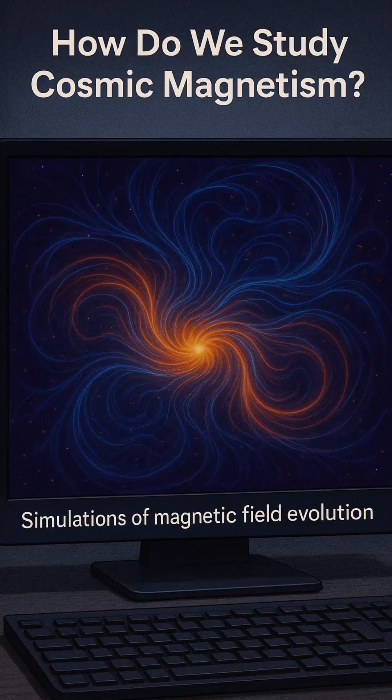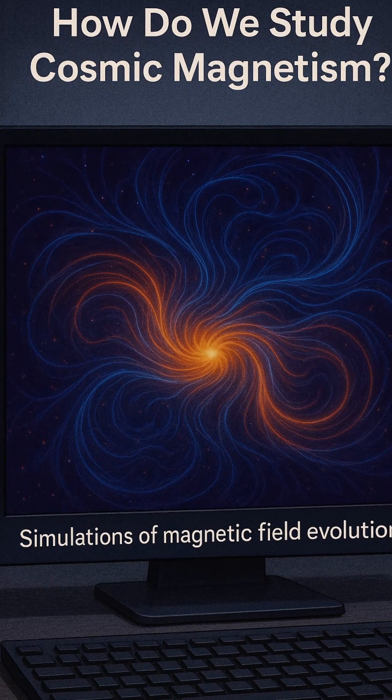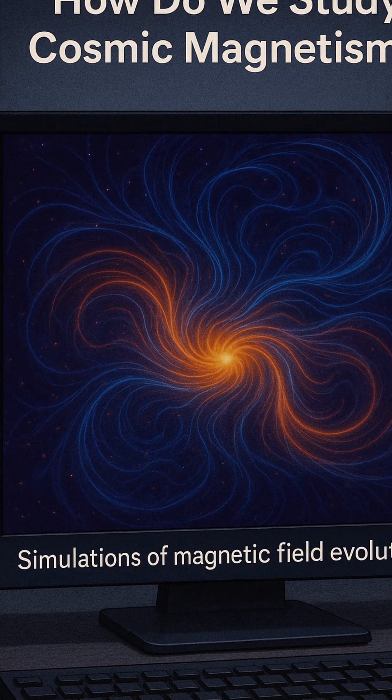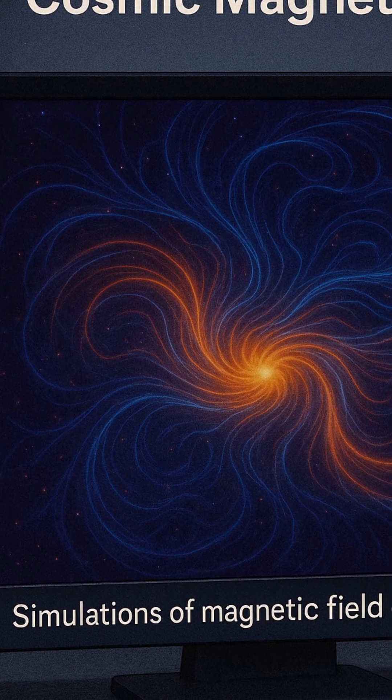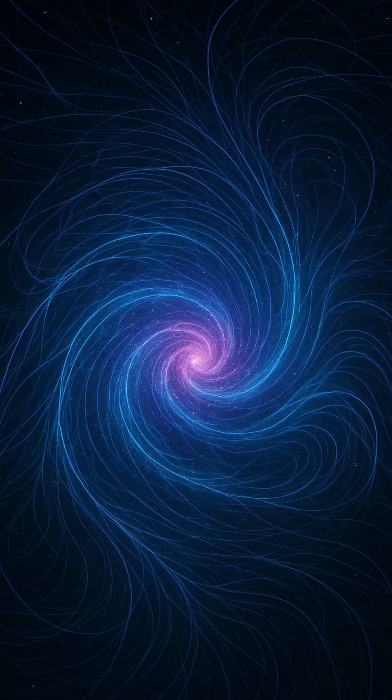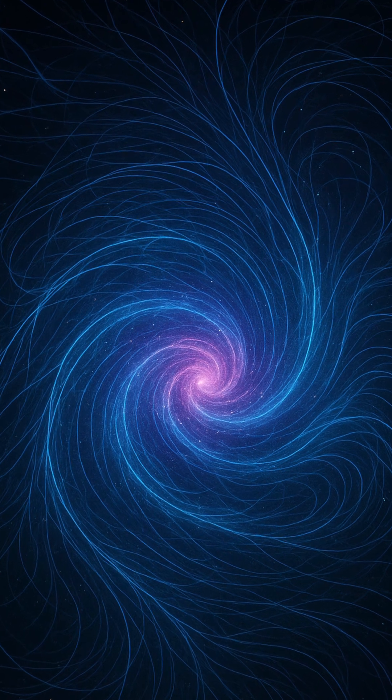By observing the degree of this rotation, scientists can infer the strength and direction of magnetic fields along the line of sight. This technique has become a powerful diagnostic tool, especially with the help of large radio telescopes like the Very Large Array (VLA).